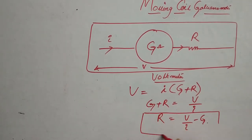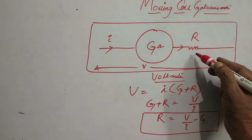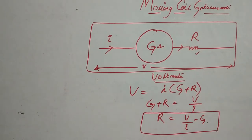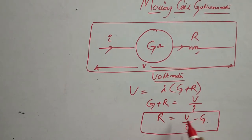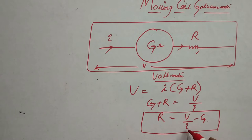This is the way how to find out the resistance that is to be connected in series with the galvanometer. Suppose you are going to measure the maximum voltage 5 volt, then V will be equal to 5. We know the maximum current can be passing through the galvanometer.